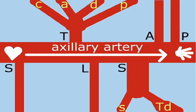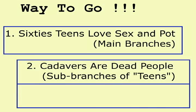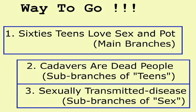Way to go! You've got a theoretical understanding of the arteries of the shoulder region. The three mnemonics are: 60s Teens Love Sex and Pot; teens grow up and die; and sex goes down and ends in an STD.